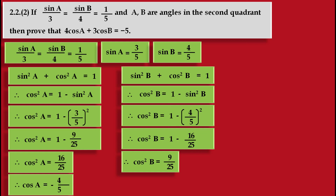Taking the square root on both sides, we get cos B is equal to minus 3 upon 5. The square root of 9 is 3 and the square root of 25 is 5, and the sign is minus. Again, why is it negative? Because angle B lies in the second quadrant, and in the second quadrant the x-coordinate is negative, so cos B is negative.